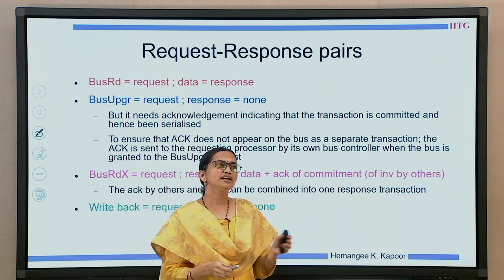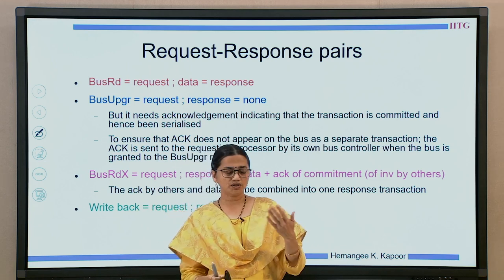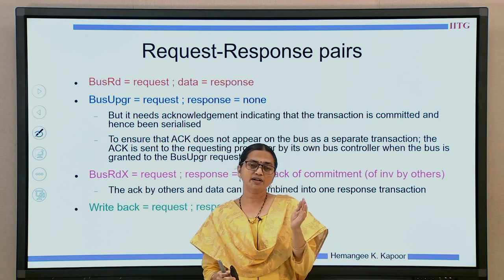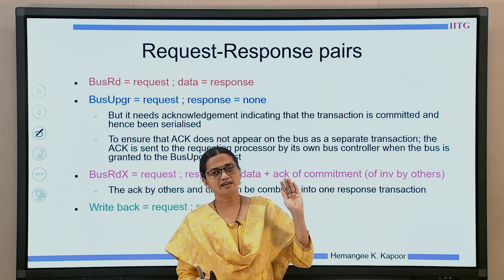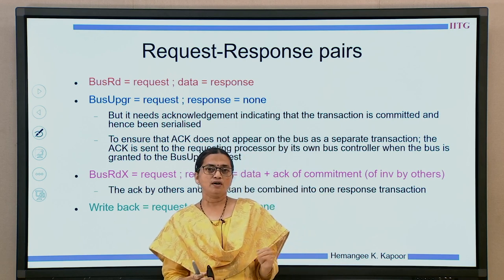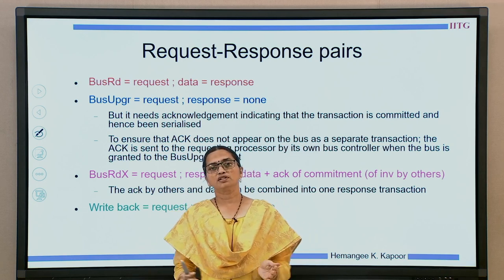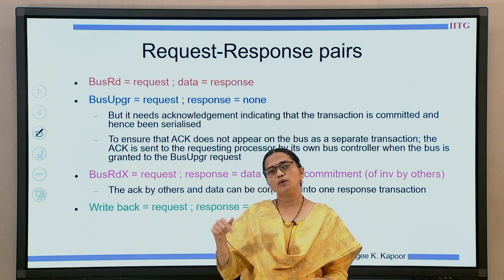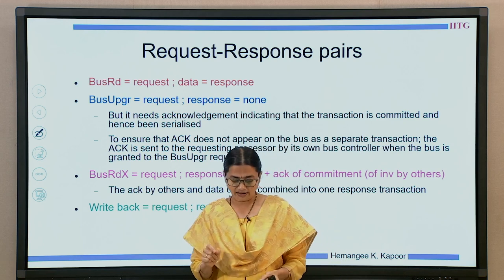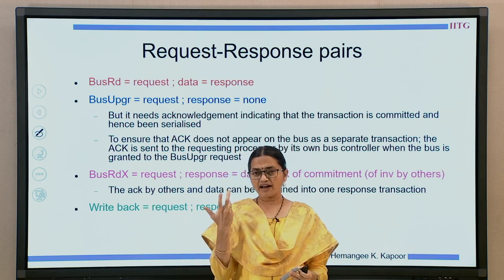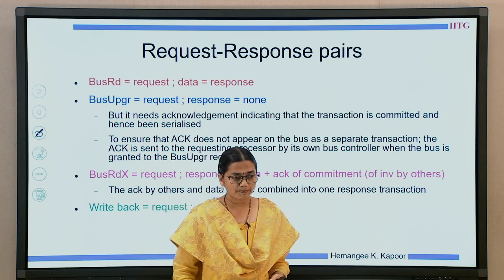Then bus upgrade. Bus upgrade takes place when the processor has the block, wants to write to it, and sends a bus upgrade onto the bus telling others they can invalidate their copies. In this case the request is bus upgrade. As for the response, in an atomic bus there is no response — the assumption is that when a bus upgrade is sent all processors will invalidate their blocks. However, in a split transaction bus some kind of response is needed.